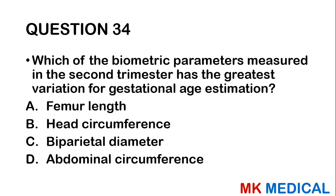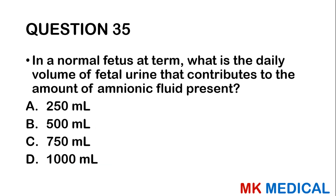Question thirty-four: Which of the following biometric parameters measured in the second trimester has the greatest variation for gestational age estimation? A, femur length; B, head circumference; C, biparietal diameter; D, abdominal circumference. The first three don't have much variation, but abdominal circumference has very high variation and is not a reliable measure of gestational age.